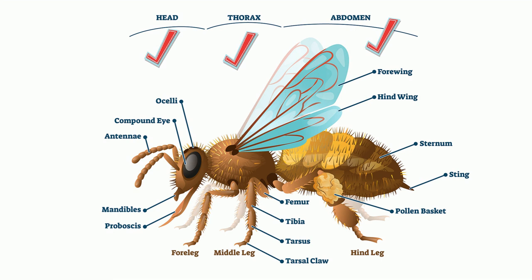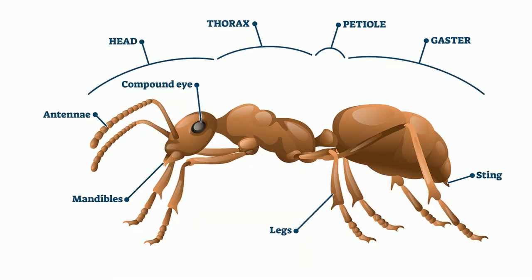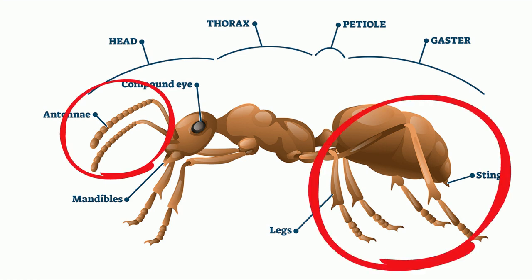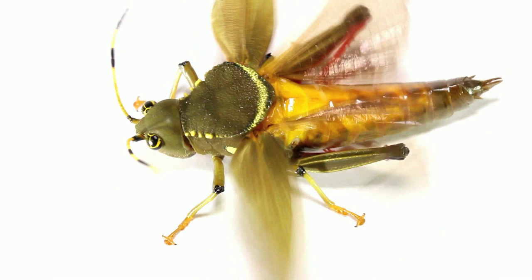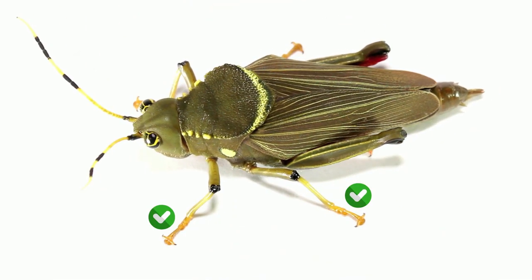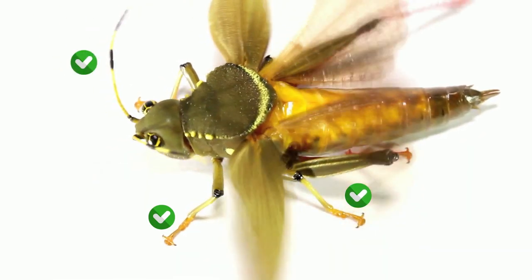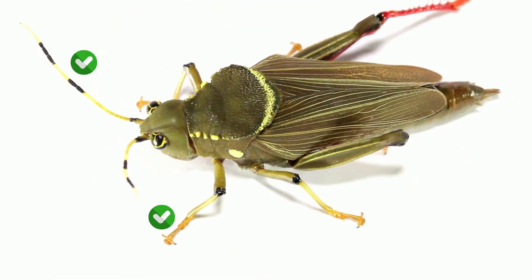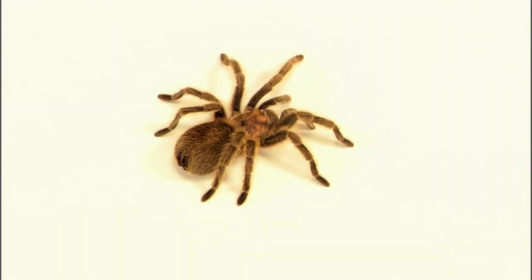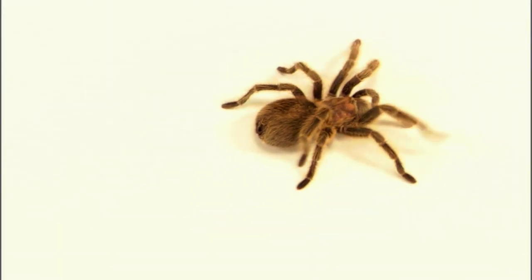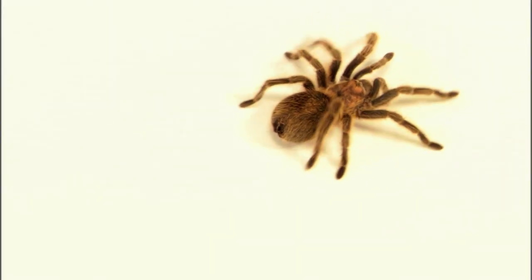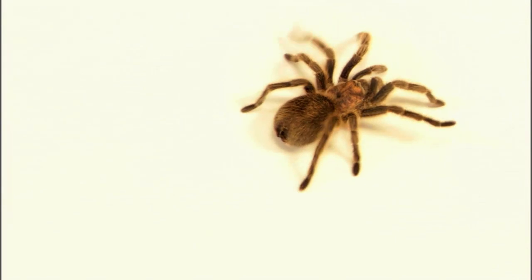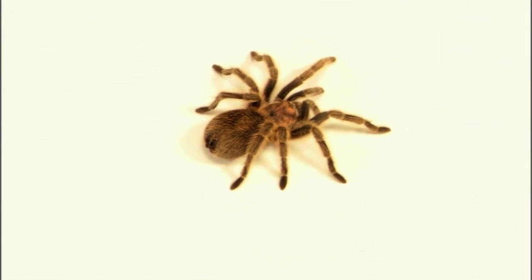Arthropods also have segmented appendages. An appendage is a portion of the arthropod that sticks out from its body and has a function. Examples include legs, arms, and antennae. The appendages of arthropods are made of many joints. A joint is the location where two parts meet. Humans also have joints where our bones come together.